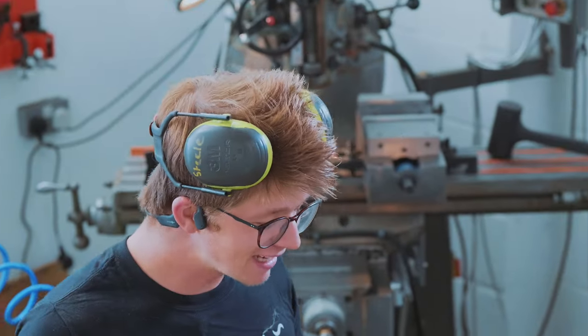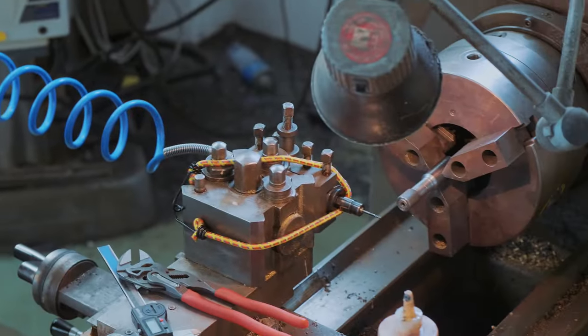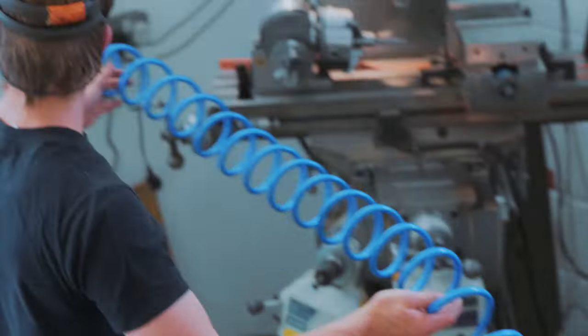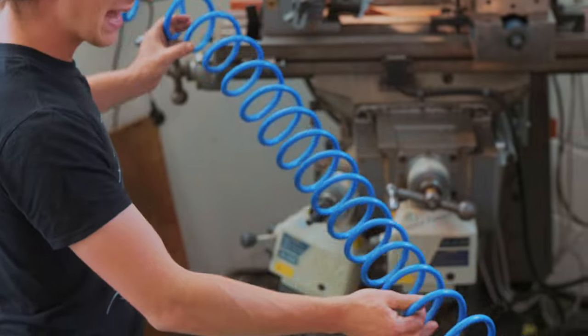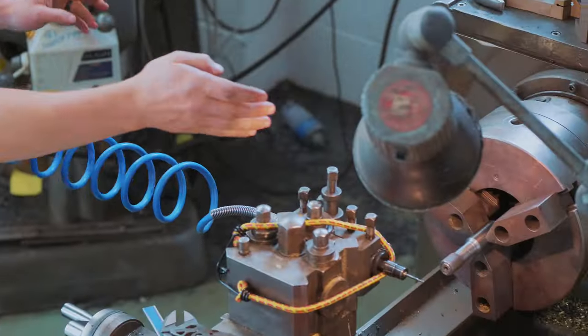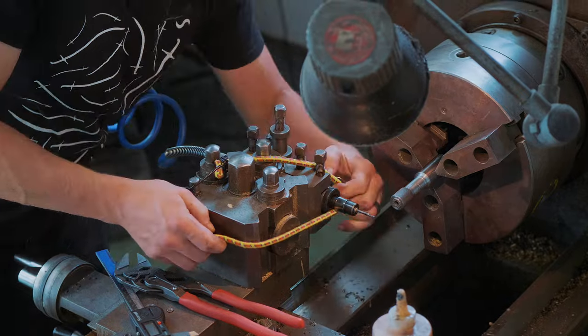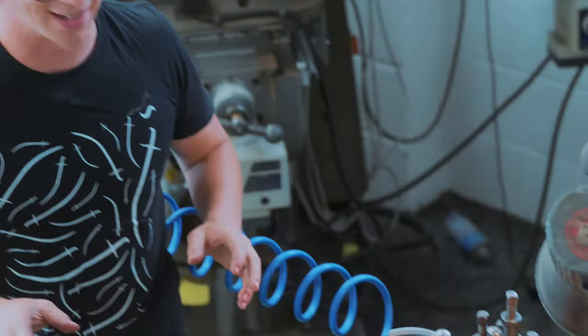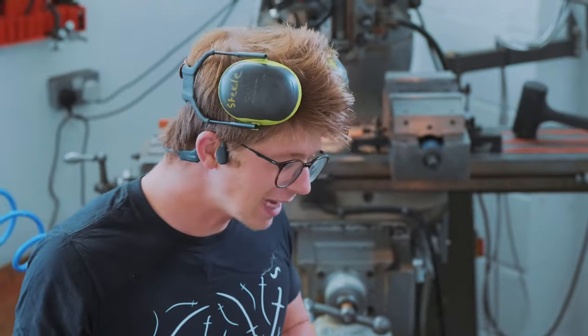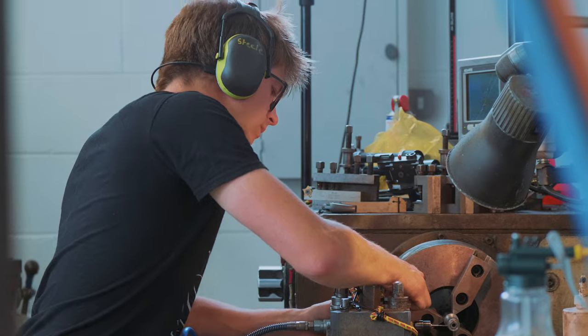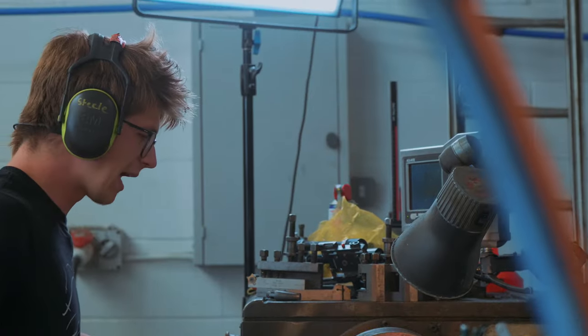I have really and truly done some sketchy things in the lathe, but I think this tops it. Look at this. We have a bloody airline near a spinning chuck and bungee cords. This is how I turn on my die grinder. That's just disaster waiting to happen. Why am I the way that I am? Let's see what happens.